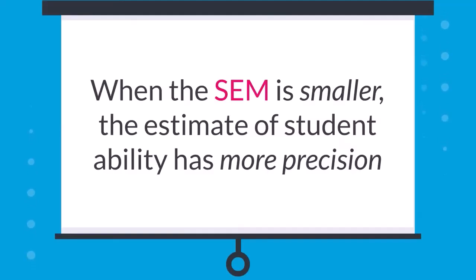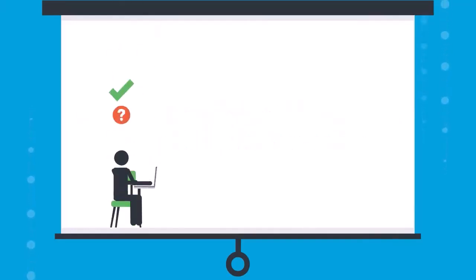When the standard error of measurement is smaller, it means the estimate of student ability has more precision, not so much noise or measurement error. Tests with more questions generally have smaller standard errors because administering more questions allows us to collect more information about a student's ability and therefore have a more precise scale score.